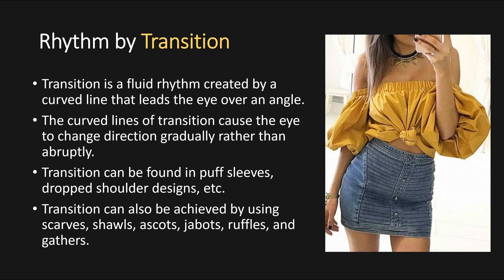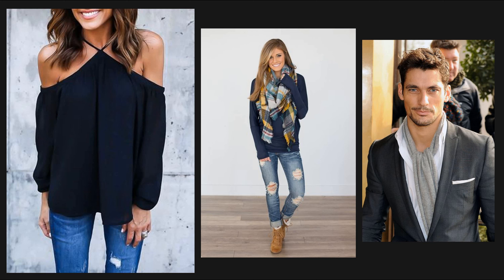Then we have rhythm by transition. Transition is a fluid rhythm created by curved lines that lead the eye over an angle. The curved lines of transition cause the eye to change direction gradually rather than abruptly. Transition can be found in puff sleeves, drop shoulders, and similar designs. Transition can also be achieved by using scarves, shawls, ascots, jabots, ruffles, and gathers. You can see that rhythm by transition is being used on the drop sleeve top as well as the puffed sleeves, and then in the next pictures with the drop shoulder halter top and the scarves.